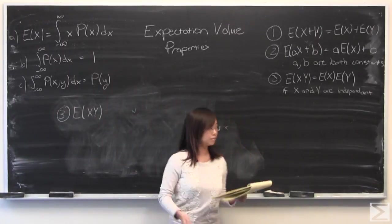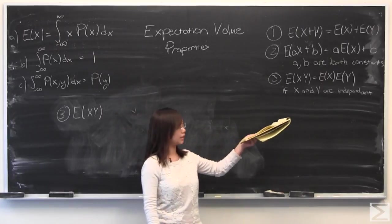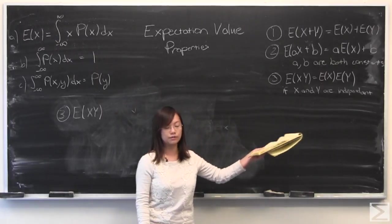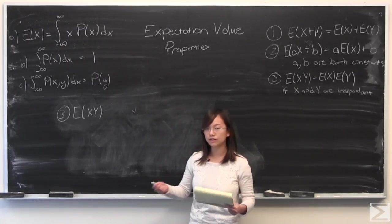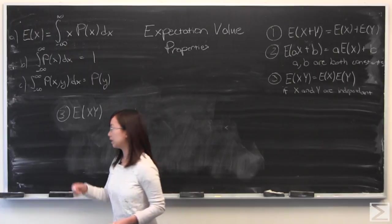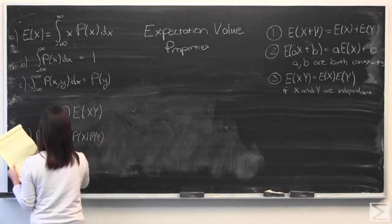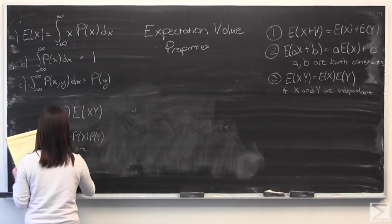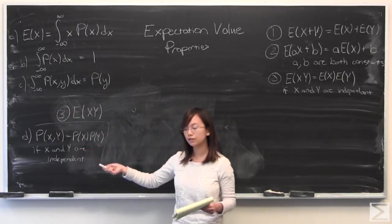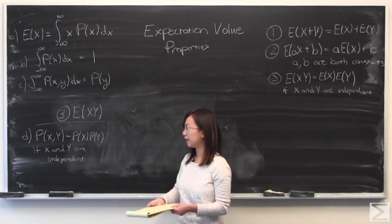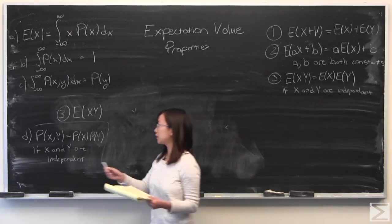Expectation value of XY equals expectation value of X times expectation value of Y only if X and Y are independent. When X and Y are independent, there's an important property that comes along with this. The joint probability density function equals the separate ones multiplied if X and Y are independent. That's going to be important in proving this last one. So I'll start.